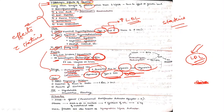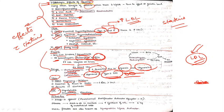Resins are the drug of choice in pregnancy and children, and can be added to a statin. Side effects include unpalatability and they may lead to steatorrhea and fat-soluble vitamin malabsorption.